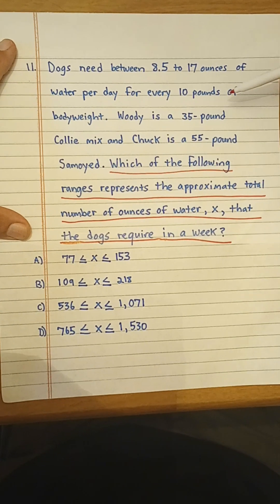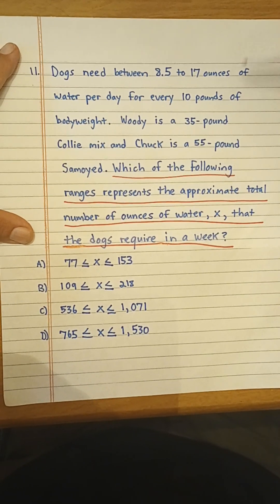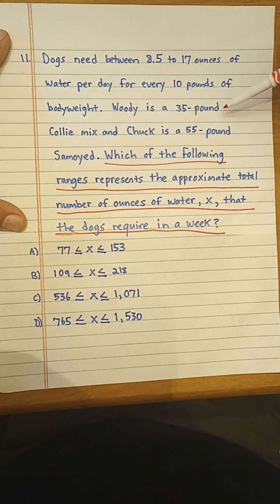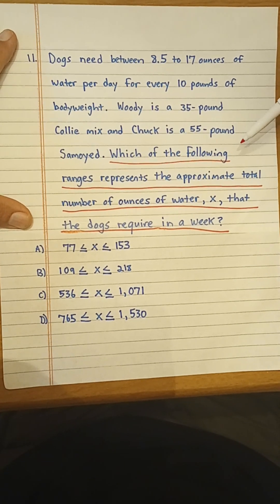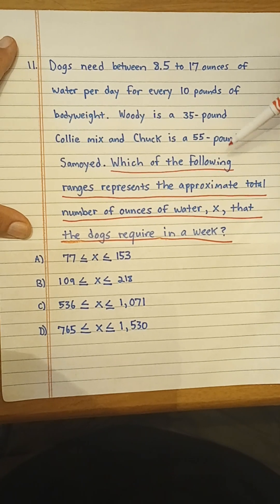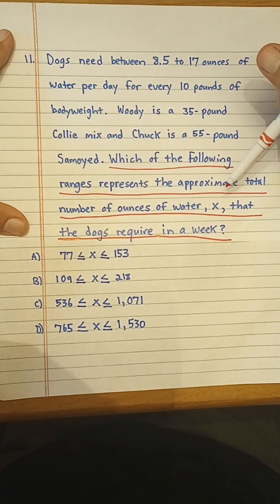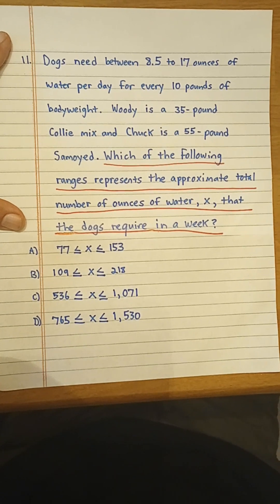Woody is a 35-pound Collie mix, and Chuck is a 55-pound Samoyed. Which of the following ranges represents the approximate total number of ounces of water, X, that the dogs require in a week?